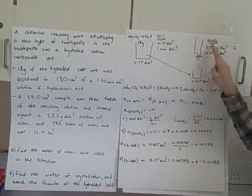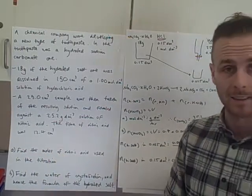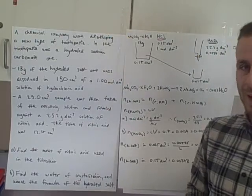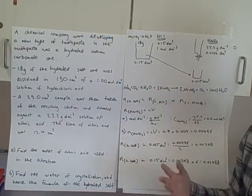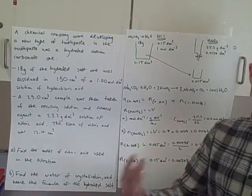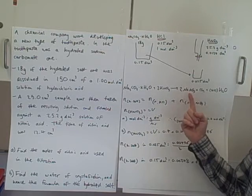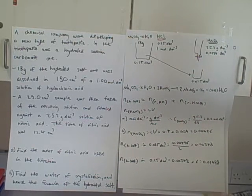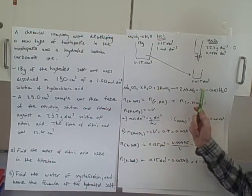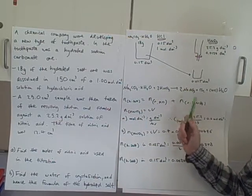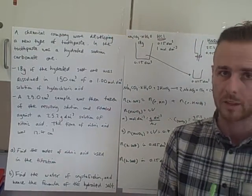All the remaining hydrated sodium carbonate in water is going to react with the nitric acid. Part one says: find the moles of nitric acid used in the titration. Before we do anything else we need equations. Sodium carbonate with nitric acid gives a 1-to-2 ratio. The carbonate gives carbon dioxide, and sodium and nitrate react together to give sodium nitrate.